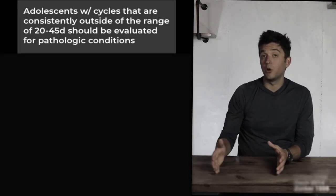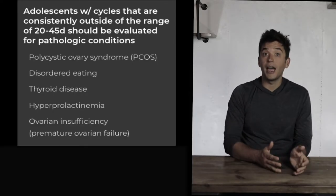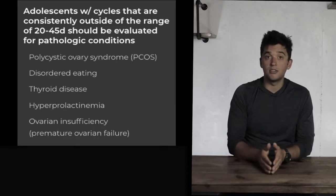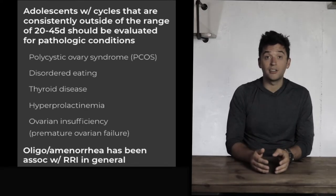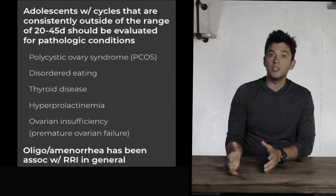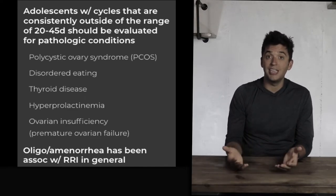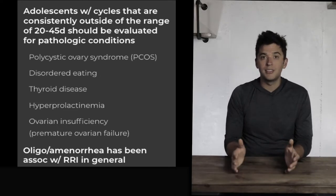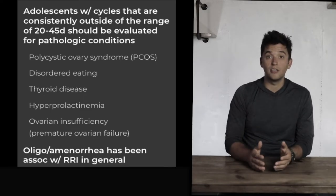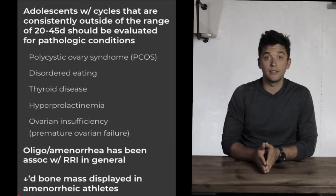There's a 4.3 to 6 times increase in stress injury risk with menstrual dysfunction. Athletes with cycles outside the 20–45 day range may have other underlying conditions such as polycystic ovarian syndrome, thyroid disorders, hyperprolactinemia, or ovarian insufficiency. Amenorrhea is a significant risk factor for all running-related injuries. This is when having a good team — a quality physician and dietitian — is critically important.